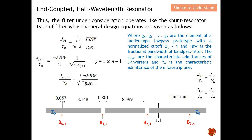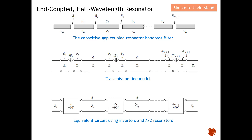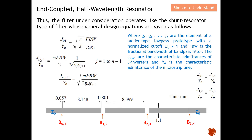The term FBW is the fractional bandwidth of the bandpass filter, which I've also discussed how to obtain. This term here is known as the characteristic admittance of the J-inverter, and Y-naught is the characteristic admittance of the microstrip line. This part here — J, J, J plus one — represents the J-inverter admittance terms in the equations.